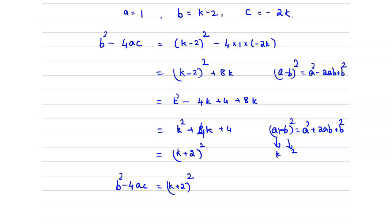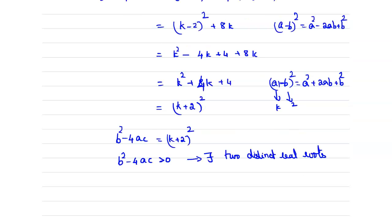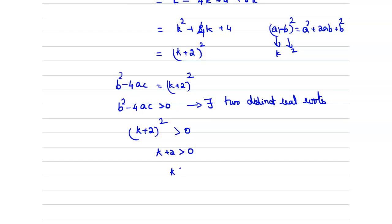To have two distinct real roots we must have b² - 4ac > 0. Since b² - 4ac = (k + 2)², and (k + 2)² is greater than 0 for all real values of k (except k = -2 where it equals 0), the discriminant is positive. Hence, for all values of k greater than -2 there exist two distinct real roots for the given quadratic equation.